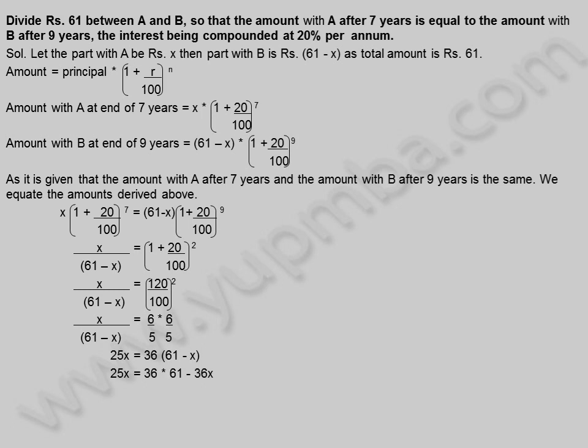25 X is equal to 36 into 61 minus 36 X. 61 X is equal to 36 into 61. X is equal to 36. So A's share is 36 rupees. B's share is equal to 61 minus 36 rupees, which is equal to 25 rupees.